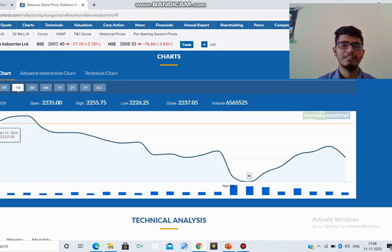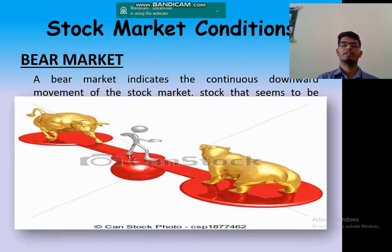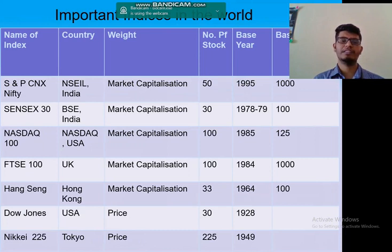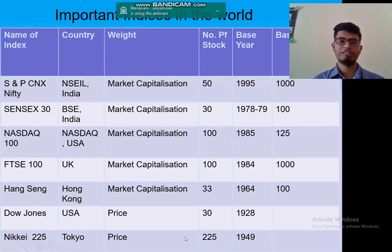So here it is a bearish type of market. These are the important indices in the world: SNP, CNX Nifty — India, weightage by market capitalization. Sensex 30 — BSE, India, market capitalization. NASDAQ — USA, market capitalization. FTSE — UK, market capitalization. Hang Seng — Hong Kong, market capitalization. Dow Jones — USA, by prices. Nikkei 225 — Tokyo, by prices. These are all the famous indices of the stock market or stock exchanges.